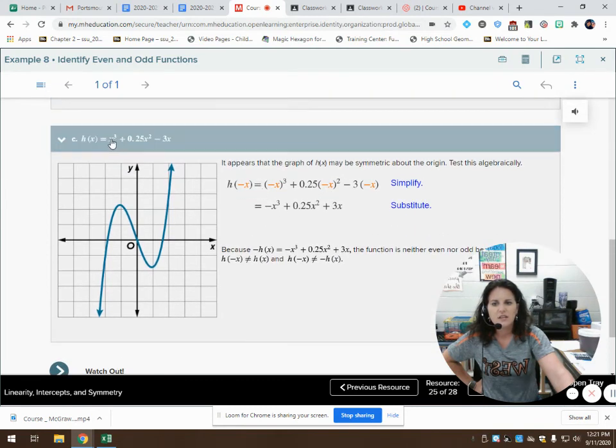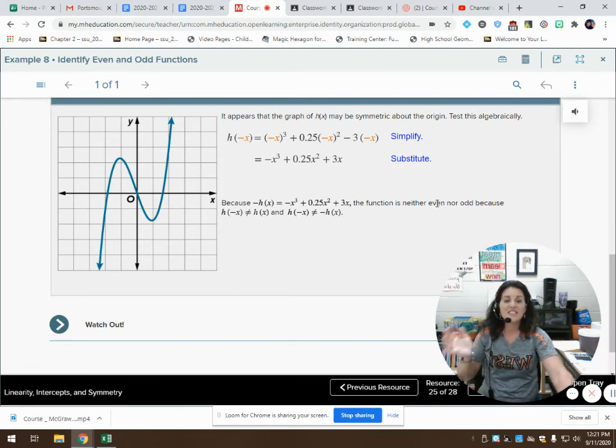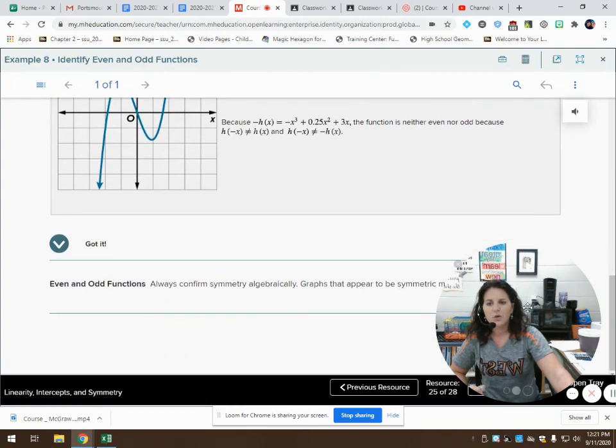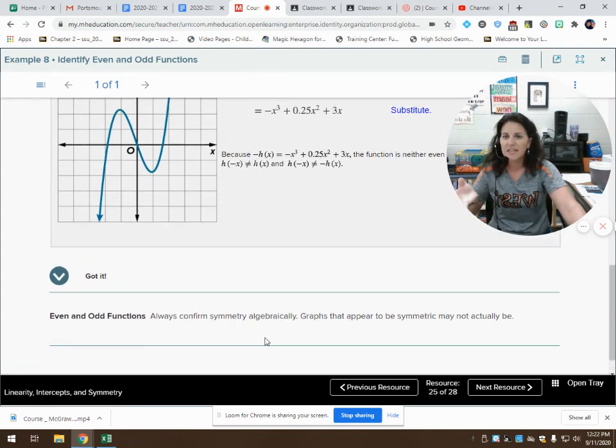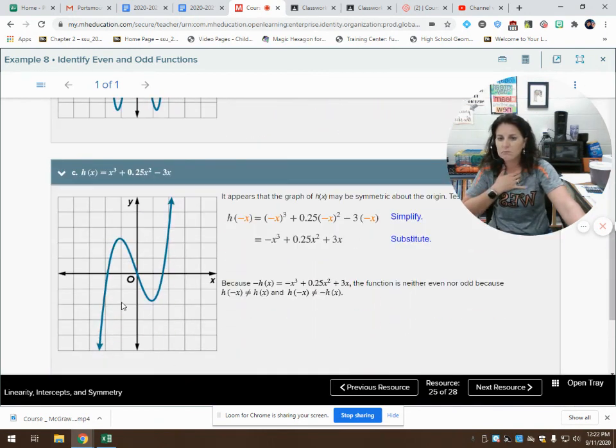Part of this, look here, we had positive, positive, negative. But we end up with negative, still a positive like the middle, and then a positive instead of a negative. Because negative h of x equals this function, the function is neither odd nor even. It's neither odd nor even. Make sure that you understand this, that we can always confirm it algebraically. They might appear to be symmetric, but then not actually be symmetric. This one appeared to be symmetric, but it may not be symmetric. It's not going to be symmetric, because it's neither even nor odd.